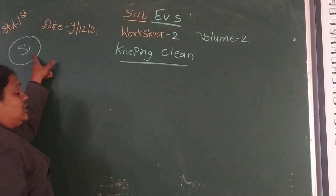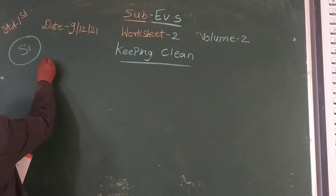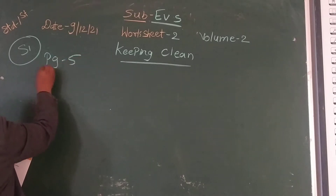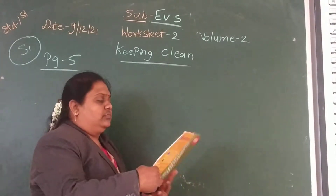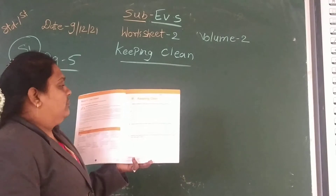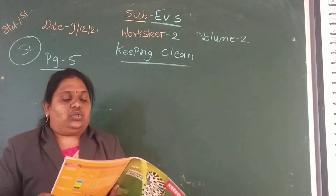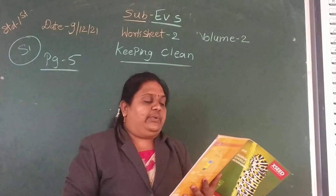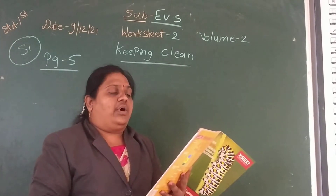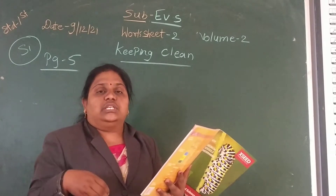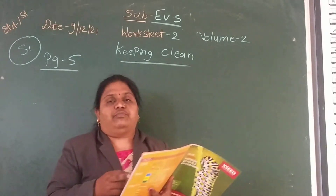S1, page number 5. The topic is 'Keeping Clean.' Question number one: Write 4 activities by which germs can enter our body. And draw one of them. From the four activities, you have to draw one of them.